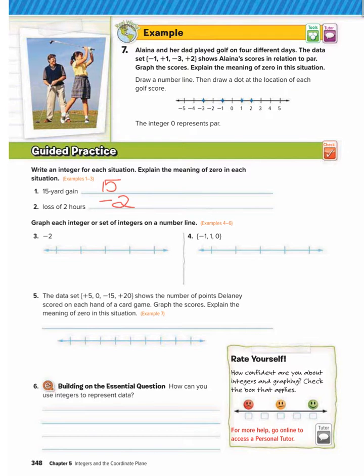Graph each integer or set of integers on a number line. So number three, we want to graph the integer negative two. So I'm going to add some numbers to this number line. And to graph negative two, I would just put a dot on negative two.